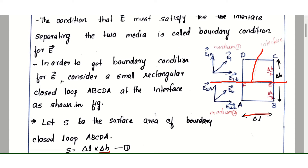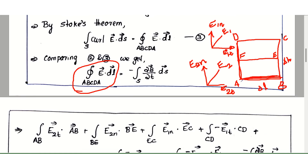We set up midpoints E and F on the loop. Then we divide the path into segments: AB, BE, EC, CD, DF, and FA. For the first portion AB, the electric field tangential component E2t contributes E2t times the distance AB. For segment BE, the normal component E2n contributes E2n times the distance BE.